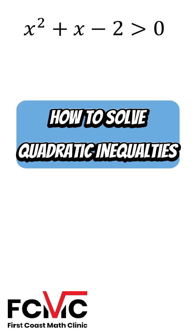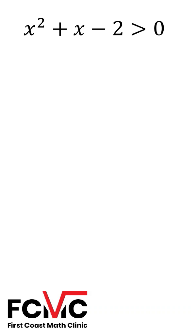How do we solve quadratic inequalities? So we've got our quadratic inequality, x squared plus x minus 2 is greater than 0.